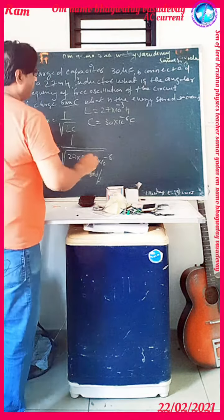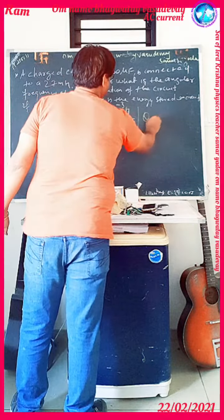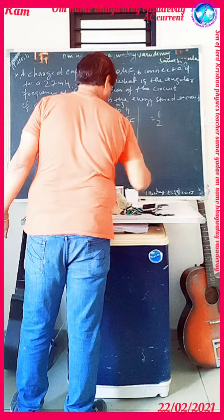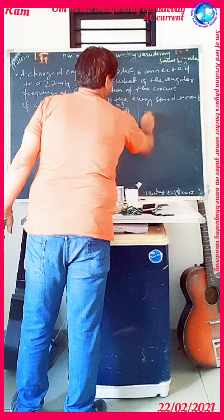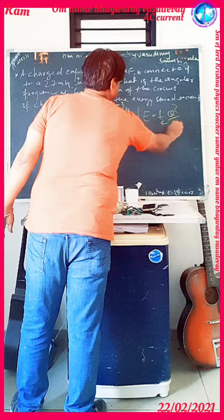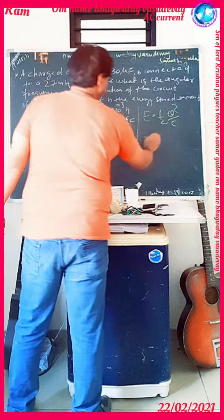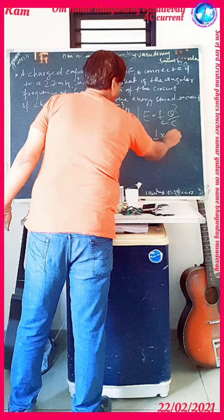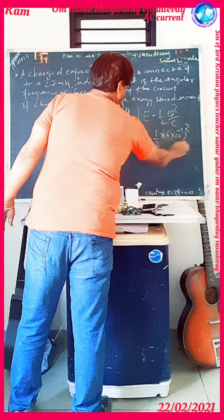Now we have to find the energy. The energy formula is E = Q² / (2C). The charge given is 6 mC, so we write: E = (1/2) × (6 × 10⁻³)² divided by C.